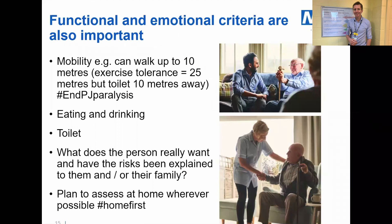Those are physiological criteria, but what we'd like to encourage in ECIST is to also use functional and emotional criteria. For example, how far can a patient walk? If a patient only needs to walk 10 metres, that should be enough — be specific. You may have heard of the NPJ campaign, which promotes getting patients up, dressed, and moving. The evidence around this is compelling. Also eating and drinking, toileting, and asking the person what is really important to them. Have the risks been shared? Have we empowered them to decide? And wherever possible, can we assess the patient at home?